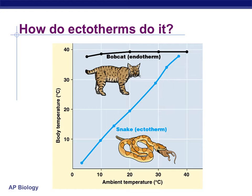Enzymes work within narrow temperature ranges. Ectotherms, like snakes — otherwise known as cold-blooded animals — don't use their metabolism extensively to regulate body temperature, so their body temperature is significantly influenced by the environmental temperature. Desert reptiles, for instance, can experience body temperature fluctuations of about 40 degrees Celsius, which is about a 100 degree Fahrenheit span.